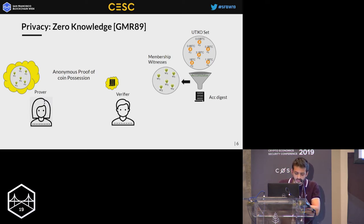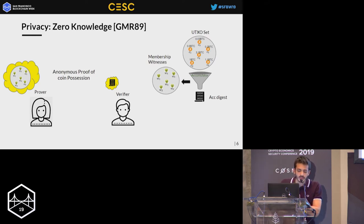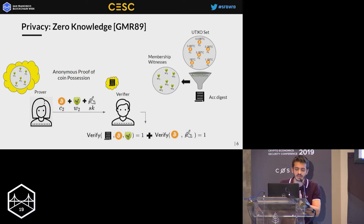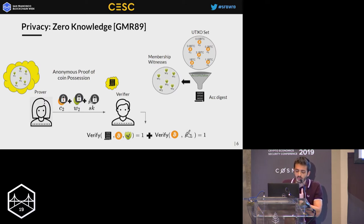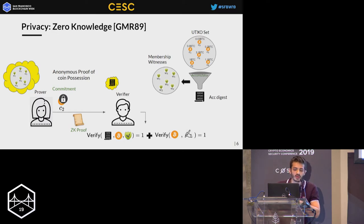Zero knowledge has to do with privacy. Say we have a prover that instead of spending her coin, she just wants to prove possession of that coin to some verifier. The verifier should ensure: one, the prover has a coin that is part of the UTXO set, and two, the prover knows the secret key for this coin. But we want this proof of possession to be anonymous — the verifier cannot learn the coin or the secret key. This is where zero-knowledge proofs come in.